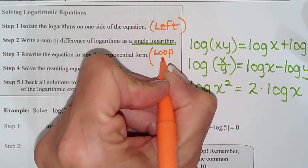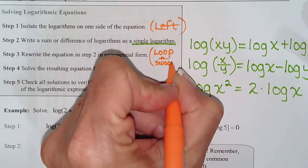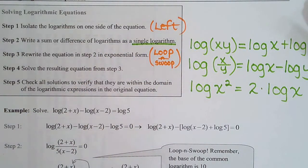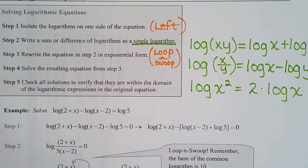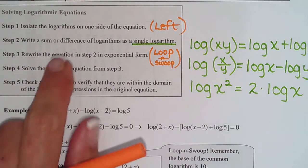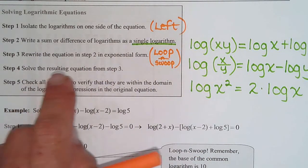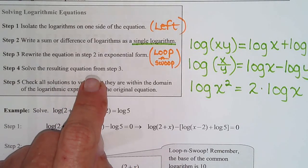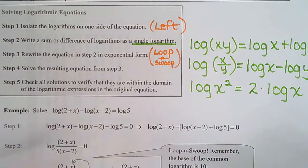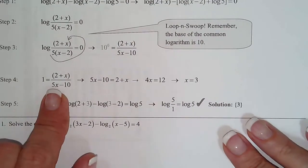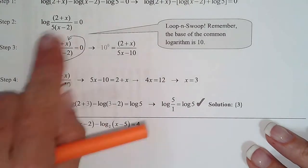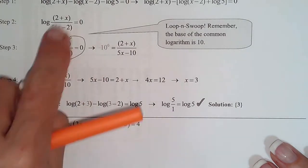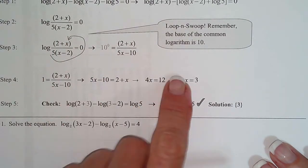This section is a compilation of everything we've done in this chapter — it has logs, exponentials, loop and swoop, and the log properties. You'll need to know a lot of what you learned in previous sections. We use loop and swoop to write it in exponential form, then solve the resulting equation. We don't really know how to solve something with a log, but once we get the logs away and write it in exponential form, we can set the two cross products equal. The goal is to change the log into exponential form so we can solve it.